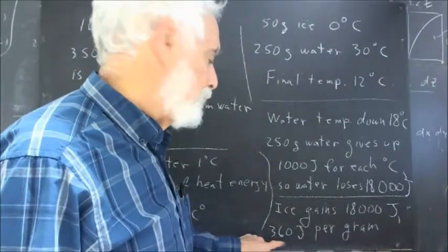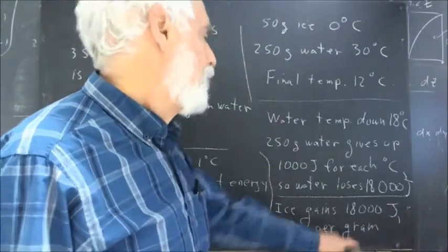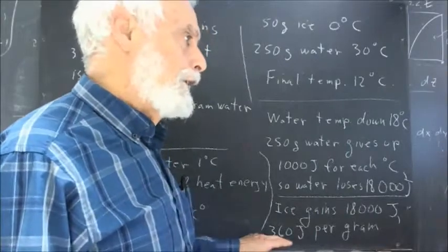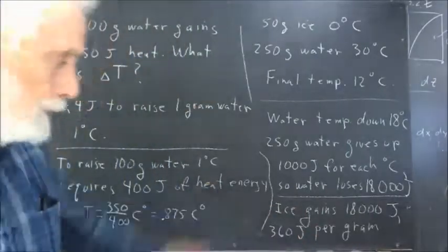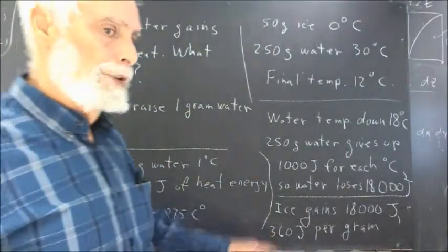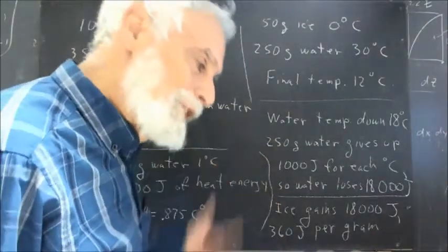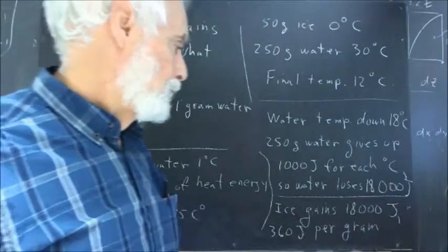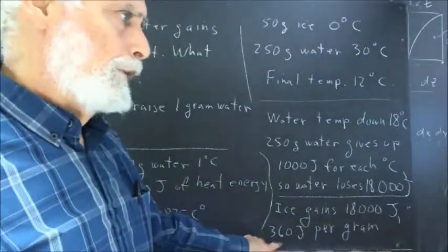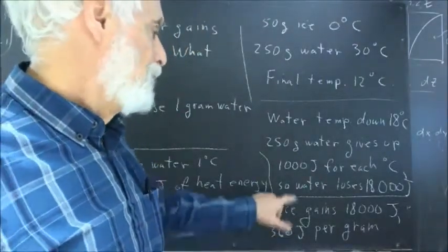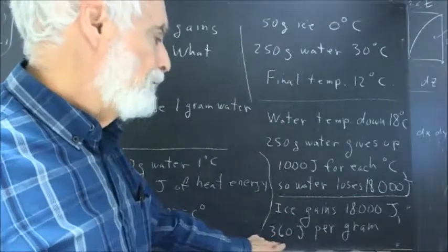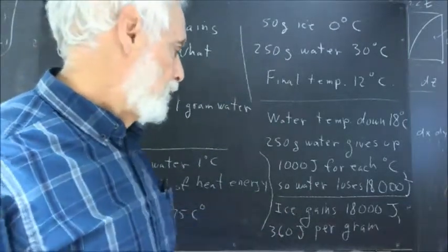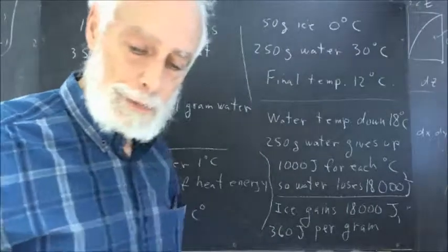then the difference, which would be 312 joules per gram, is what it takes to melt the ice. Now, the actual value of that constant is 4.186 roughly times 80 joules per gram, and that comes out around 330 joules per gram. So, if this was an experiment, we'd have pretty good results here. We'd be off by less than 10%. We'll see you next time.